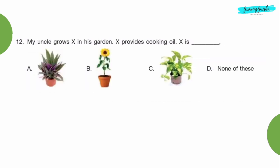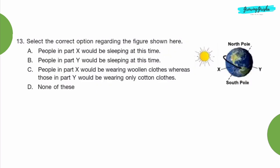Question 12: My uncle grows eggs in his garden. Eggs provides cooking oil. X is dash. Option B, sunflower plant.